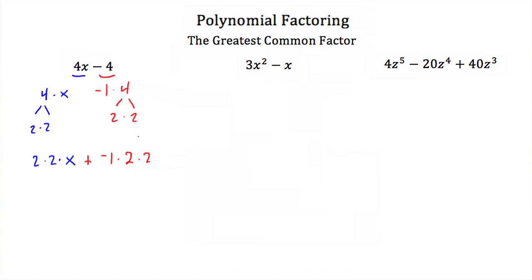We've broken down our two terms into their prime factors and we need to figure out what is common in both of them. We have a 2 and a 2, and then another 2 and another 2. So our greatest common factor is 2 times 2, or 4.